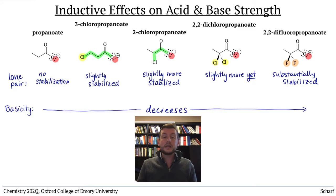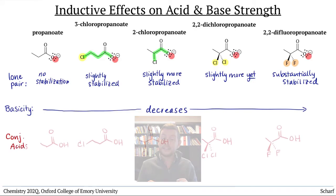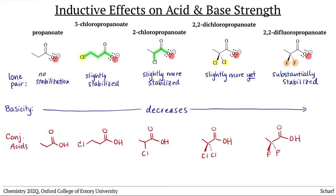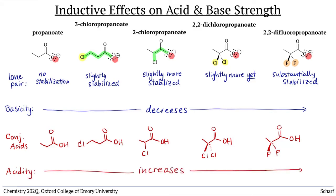Extending this logic one step further, we can conclude that the conjugate acids of these compounds have increasing acidity, because we know that conjugate acid-base pairs have inverse strength relationships. Stronger conjugate bases have weaker conjugate acids, and weaker conjugate bases have stronger conjugate acids.